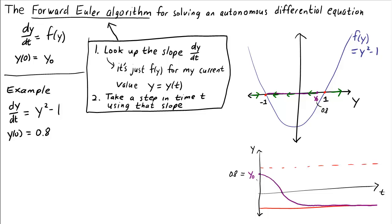Alright, let's try to use the forward Euler algorithm to estimate what y(t) should look like. We're starting off at t equals 0. And we're given that y at time 0 is 0.8. What is the slope? The slope is dy/dt evaluated at t equals 0. So this is f evaluated at y(0). Y(0) is 0.8, we're given that. So the slope is 0.8 squared minus 1, which we can calculate as negative 0.36.